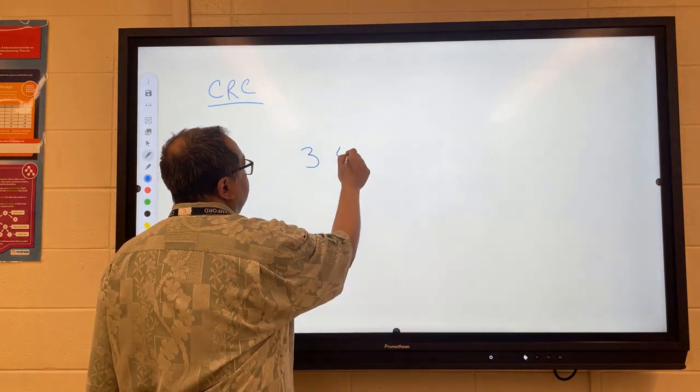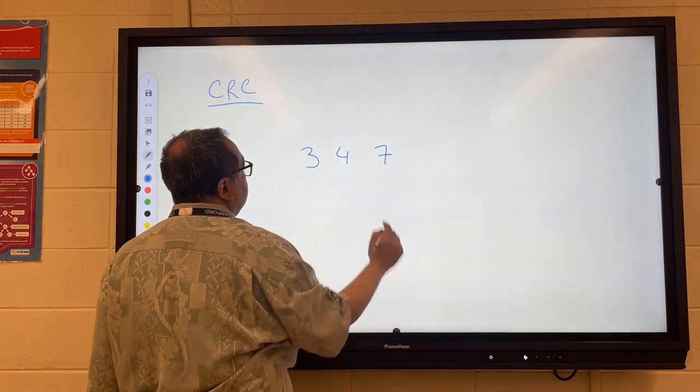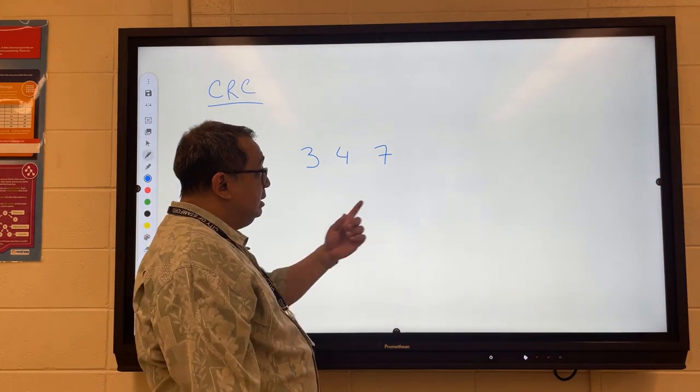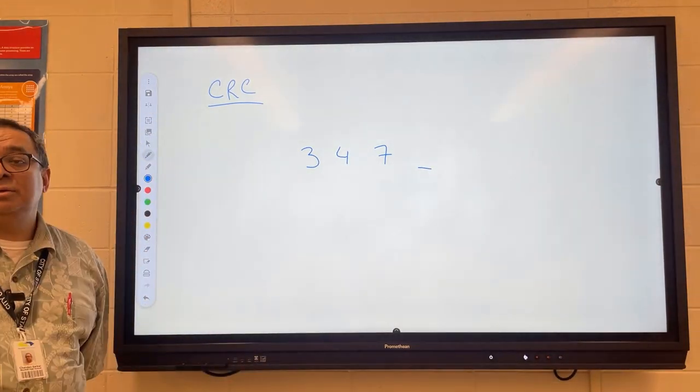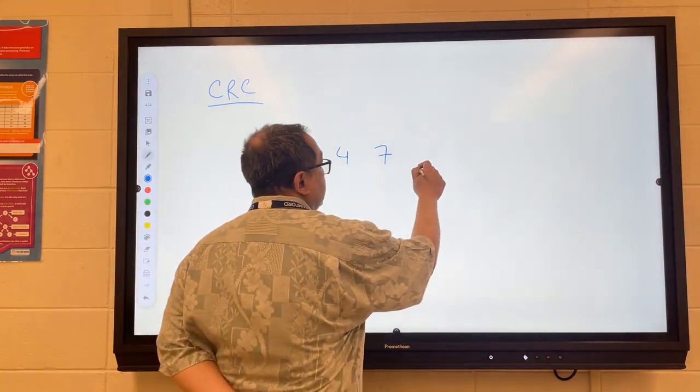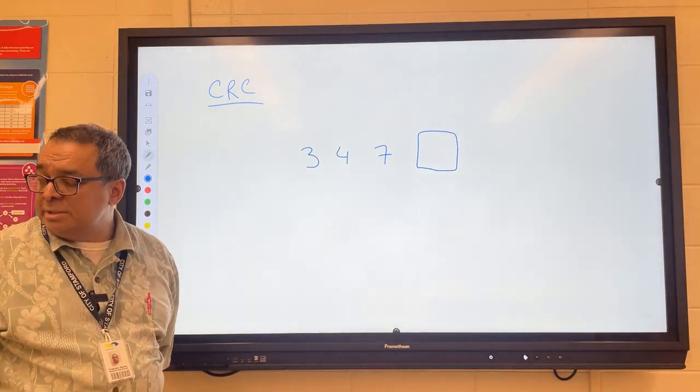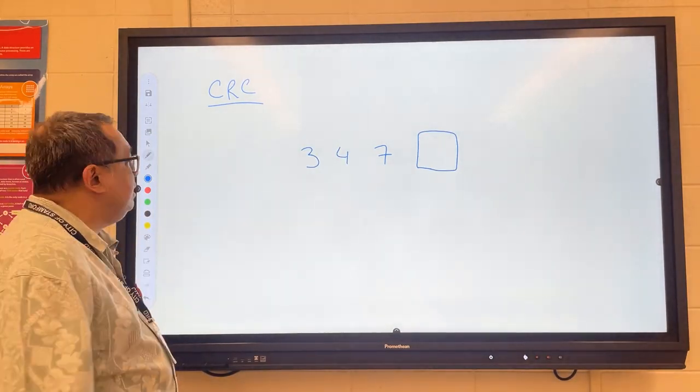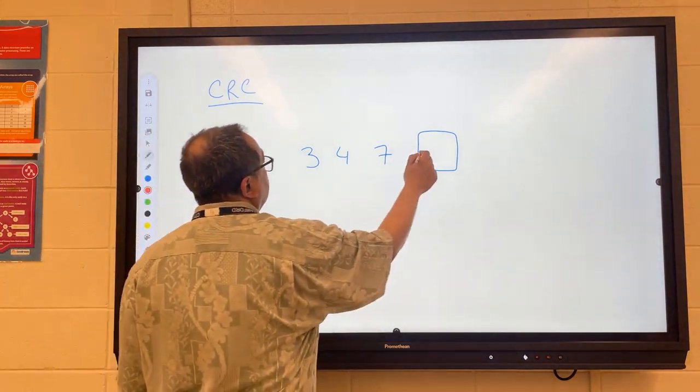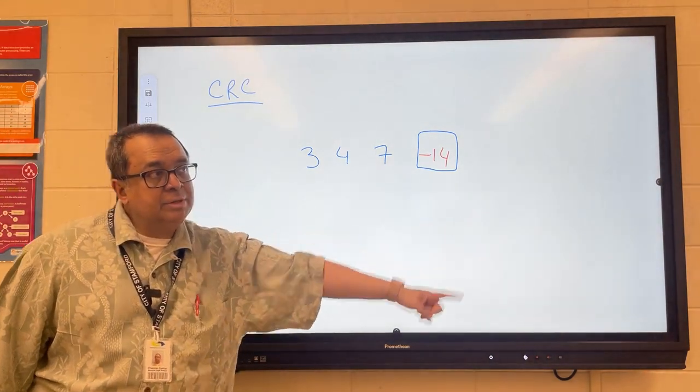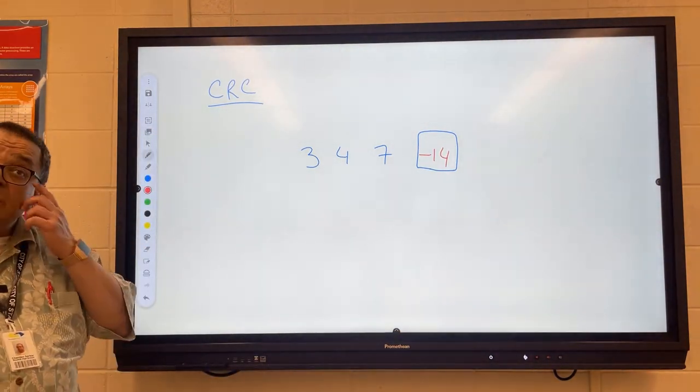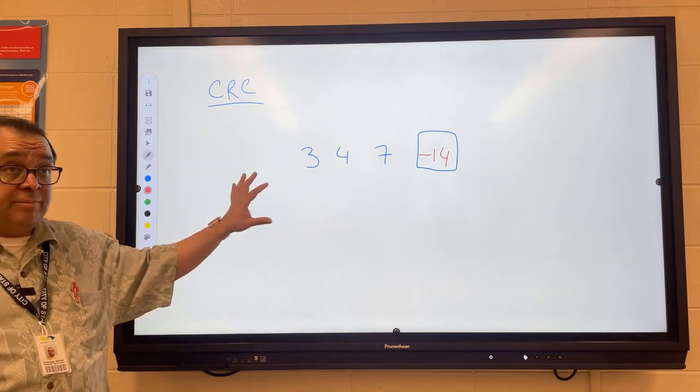So if I had this: 3, 4, 7, what would the checksum information be here? Who can tell me what would be in the box for the checksum? Yes, Mr. Mulcahy? Negative 14. Okay, you can see that if we add up all those numbers, we're going to get 0. So that would be the checksum there.